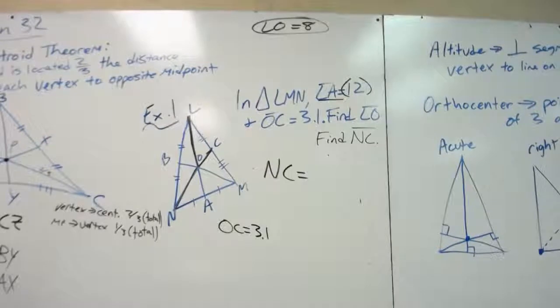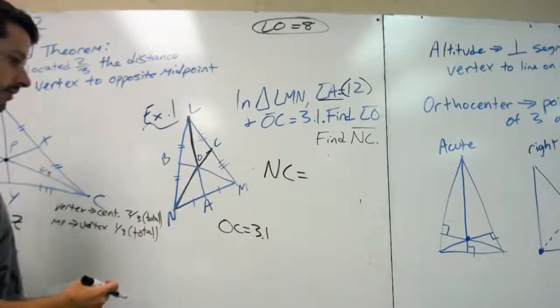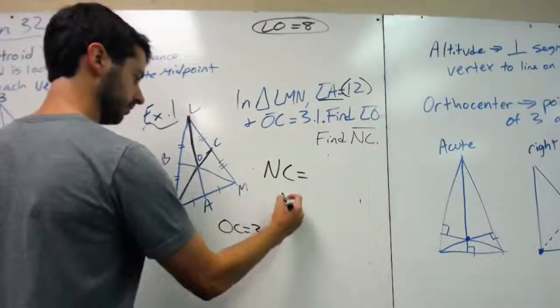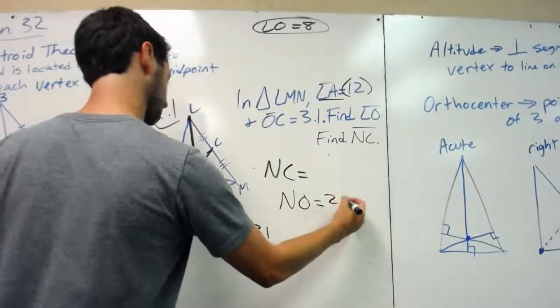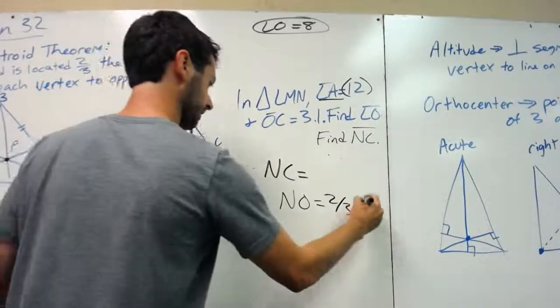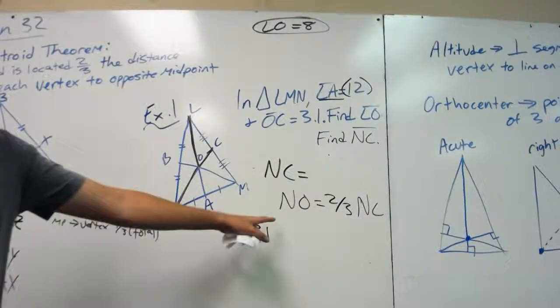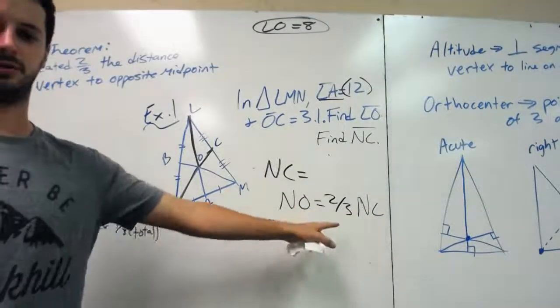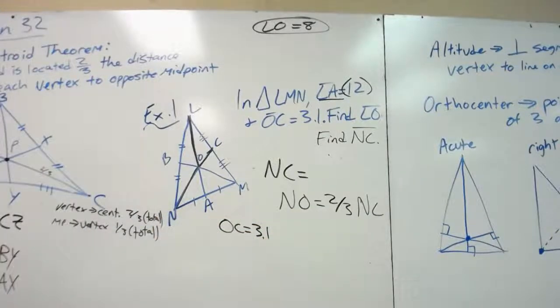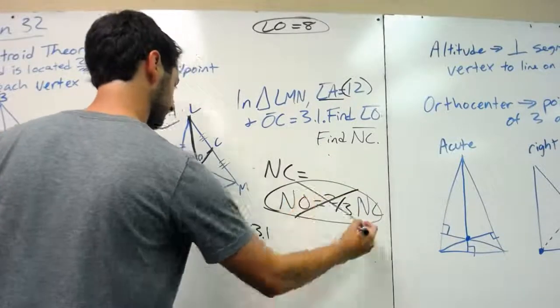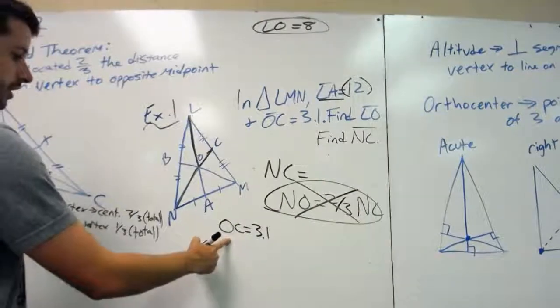So there's actually different ways you could solve. If we tried to do our vertex format, previously we've done something like NO equals two-thirds of NC. Well, that leaves us with two variables, and so we can't solve for that.